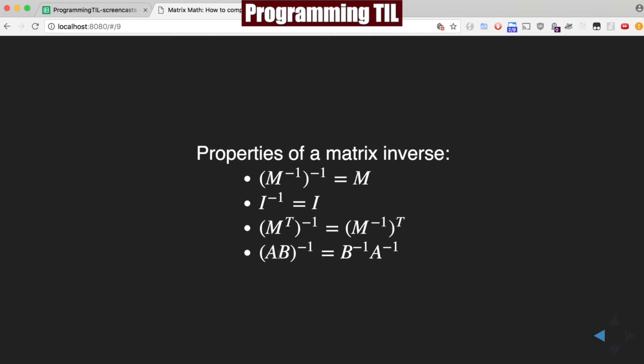And finally, two matrices, AB, multiplied together, taking their inverse is the same thing as the reverse product of each of their inverses. So B inverse times A inverse.